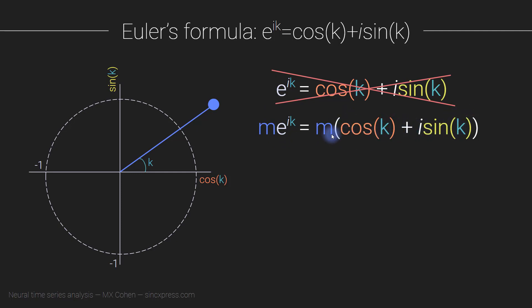And you just have to be mindful here that this is m multiplying both of these terms. So it's not just m times the cosine term, you also have to multiply m by the sine term. So this is just a small extension of the kind of canonical Euler's formula. And that allows us to represent any point anywhere on this complex plane, not only points that are on the unit circle.